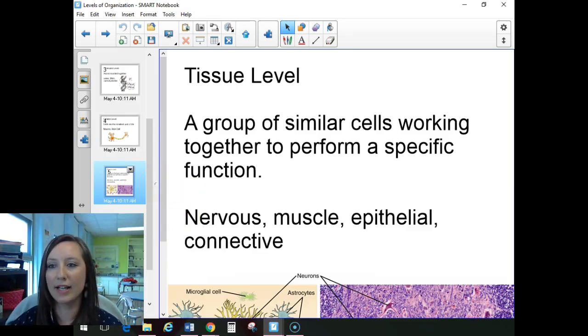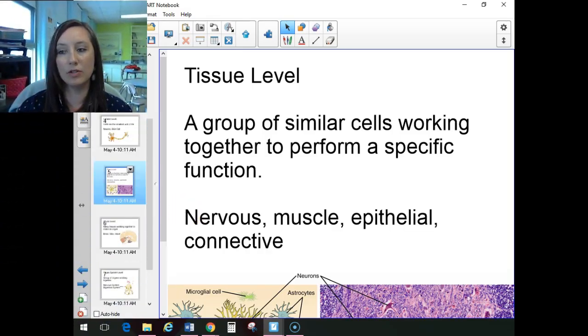Your next level here is your tissue level. So now we take a group of similar cells. If I take my neuron cells and a few other cells that do similar functions, we group them together, and they're going to perform one specific job or one specific function. Some examples of tissues: we have four main tissue types, nervous, muscle, epithelial, and connective. Your next step on the to-do list is to actually complete a tissue lab. So you'll learn about those individual four types of tissues there.